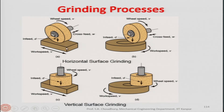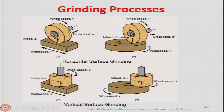In horizontal surface grinding, rotational speed is given to the wheel — that is the wheel speed — and it reciprocates to cover the entire width. A feed called the in-feed is given. The work speed is given to the workpiece which reciprocates. The wheel gets a cross-feed plus the in-feed to get the depth of cut. In-feed is given once and then again if required — it is incremental.